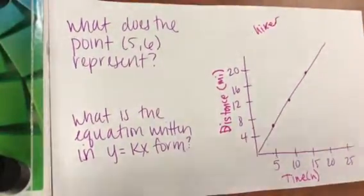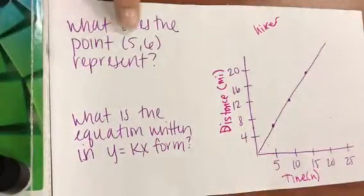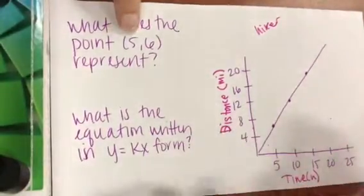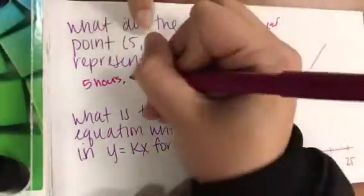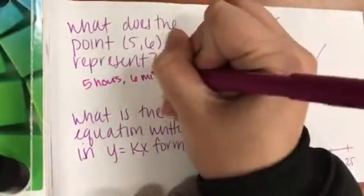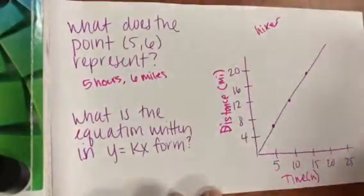So what does the point five, six represent? Well, if we know that five is our X value, we know that it's time. So that means he has hiked for five hours. And then the six is our Y value, which is distance. So in five hours, he has hiked six miles. So he hiked six miles in five hours.